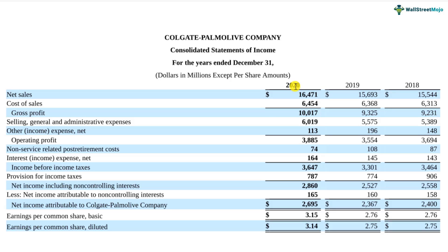Likewise, if we have to compare things like how Colgate is doing vis-à-vis Unilever as a competitor — whether the profit generated by Colgate per unit of sales is better than that of Unilever — those questions are basically answered by ratio analysis. So ratio analysis is a mathematical calculation of ratios from financial statements, which helps in understanding the company and how it might perform in the near future.